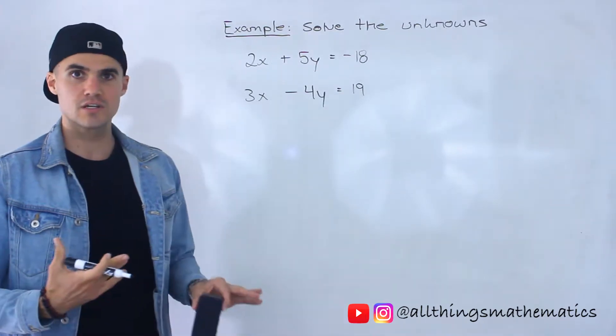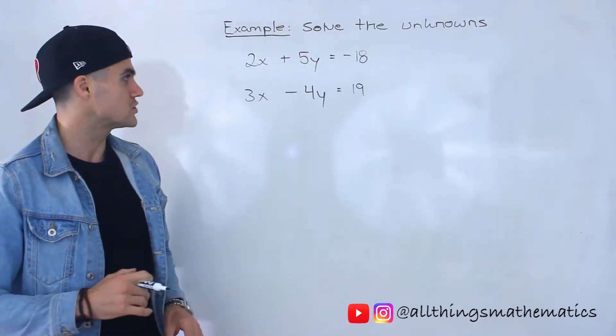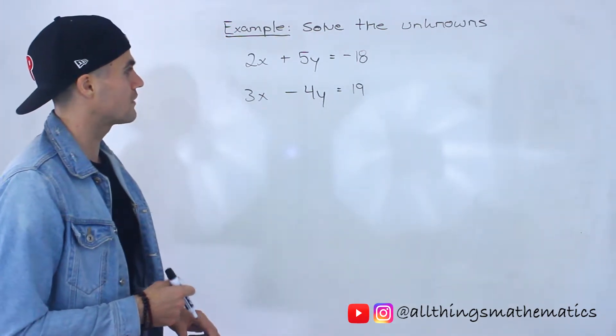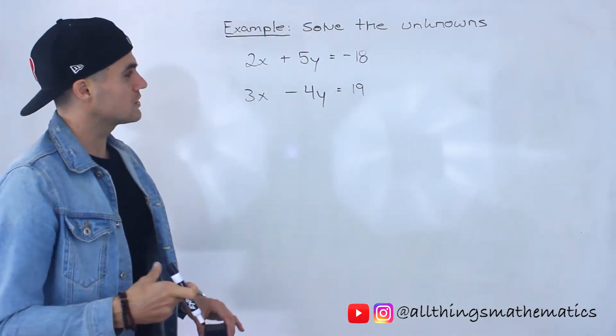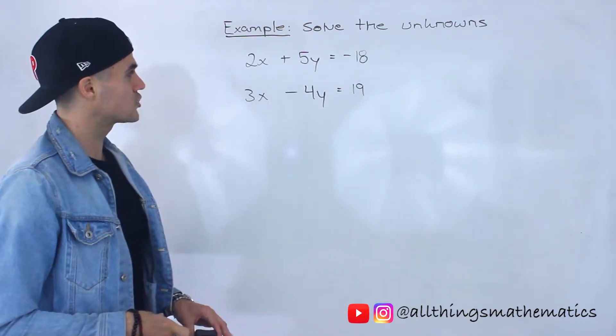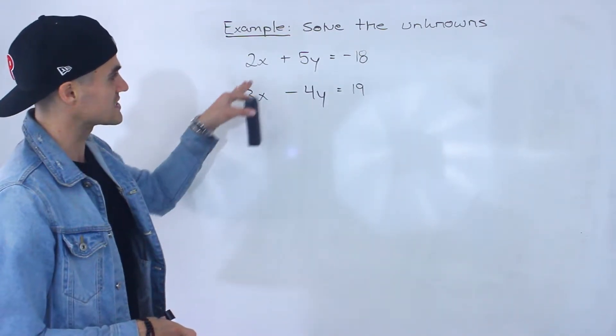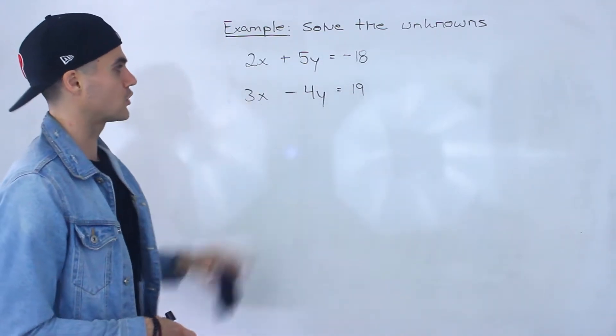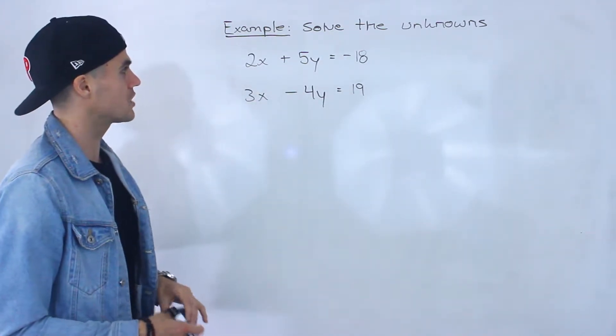So different ways to do this. You could do substitution, you could do elimination. In this case I'll show you both methods actually but I'm going to start off with elimination. Just usually with substitution what I try to do is look for single variables that are alone but notice that all the variables have a coefficient attached to them. So I'm going to start off with elimination.